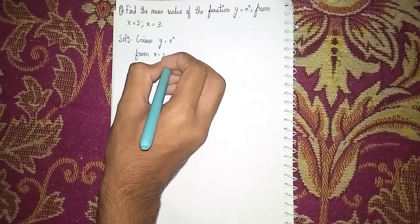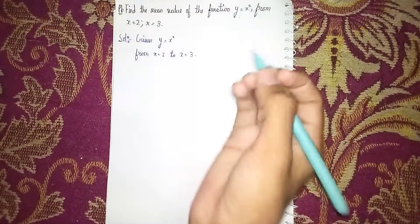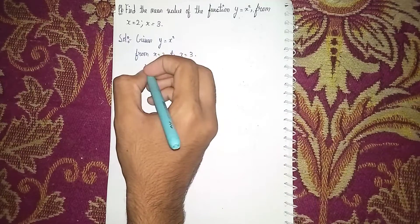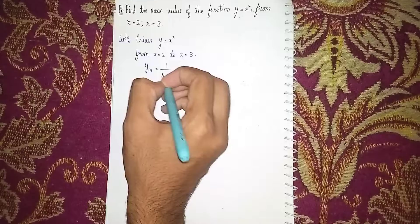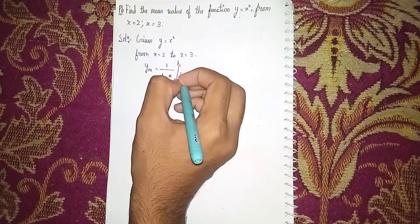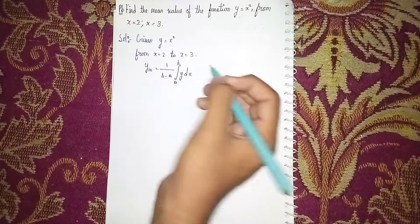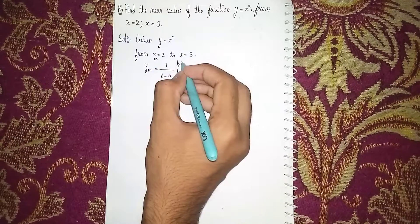Now here the formula for mean is y_m = 1/(b - a) times the integral from a to b of y dx. So here, a is 2 and b is 3.